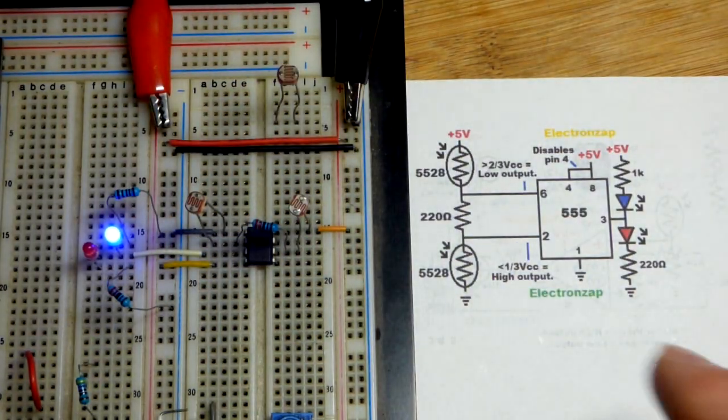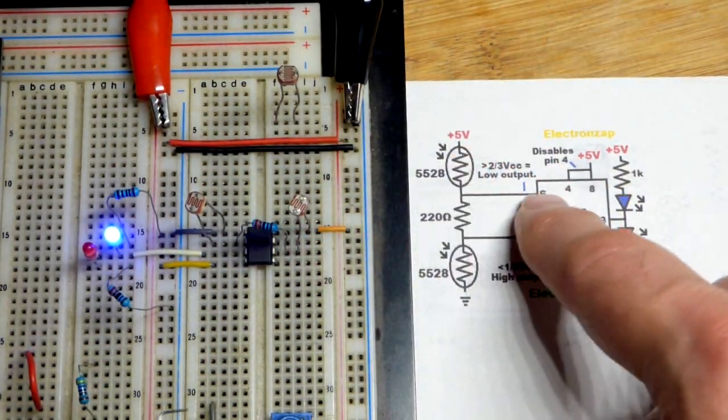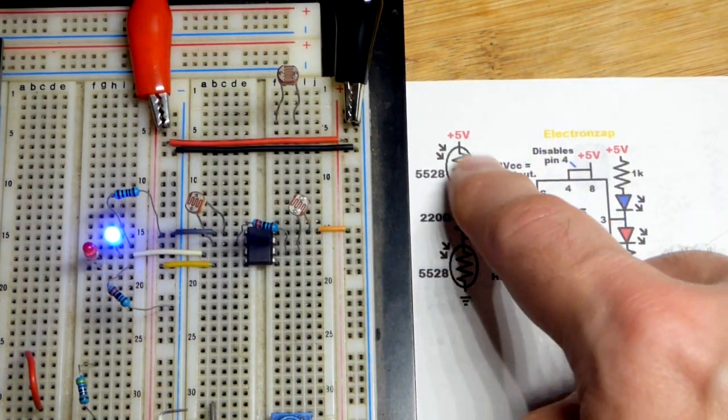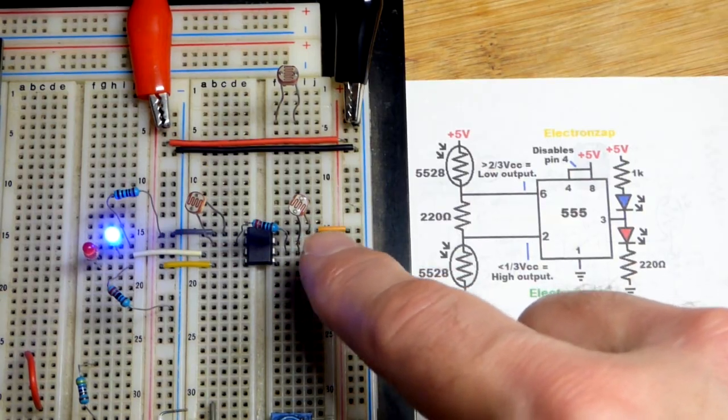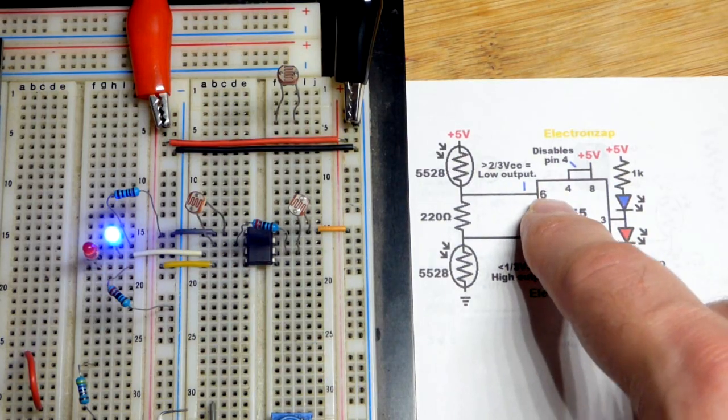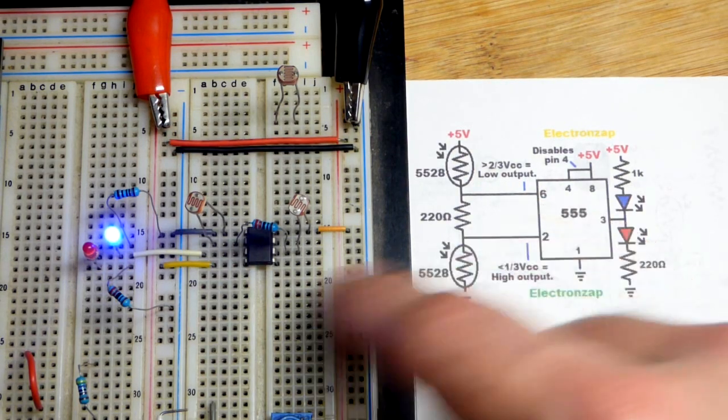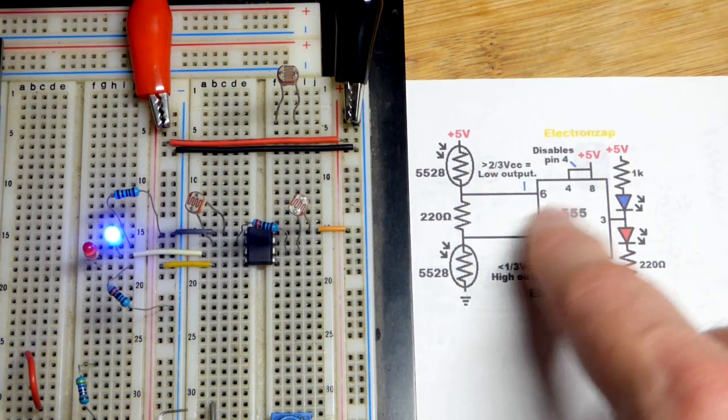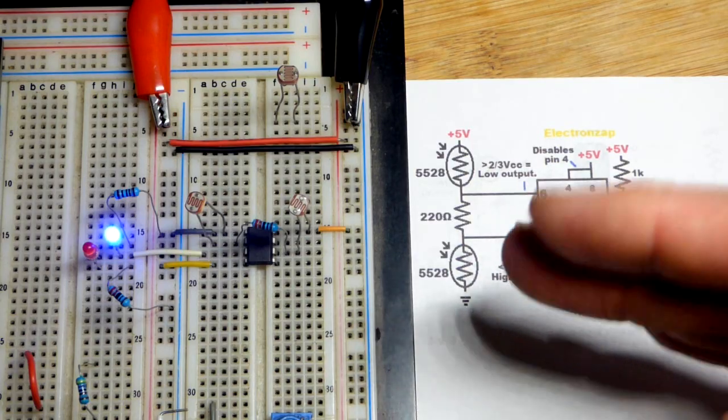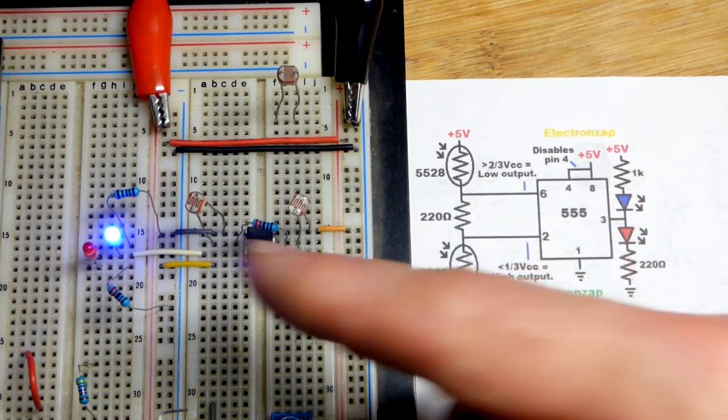There you can see when I got a brighter light on the light dependent resistor over here, that gave a high input to the threshold pin, pin number six, which set the output low. And it's going to stay low because this has hysteresis. As long as they have close to equal light the output is going to stay in whatever state it is.